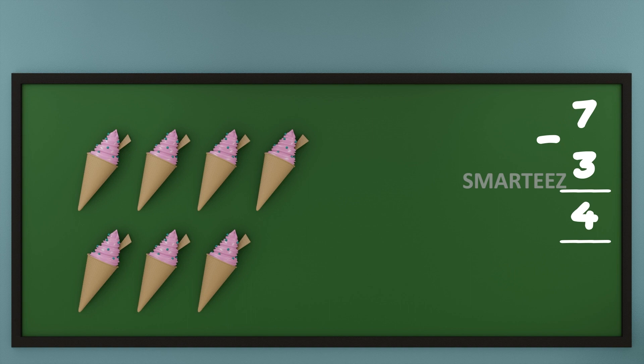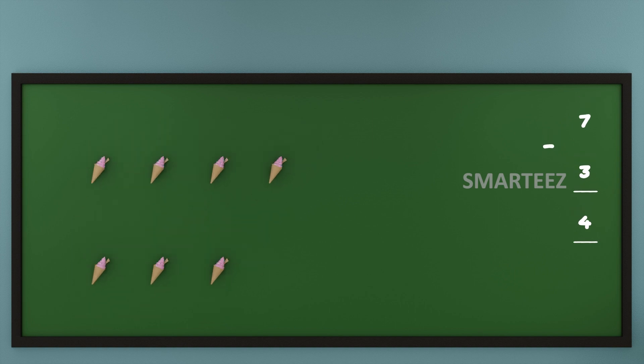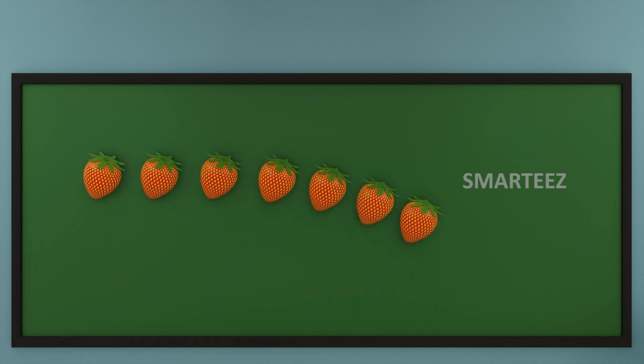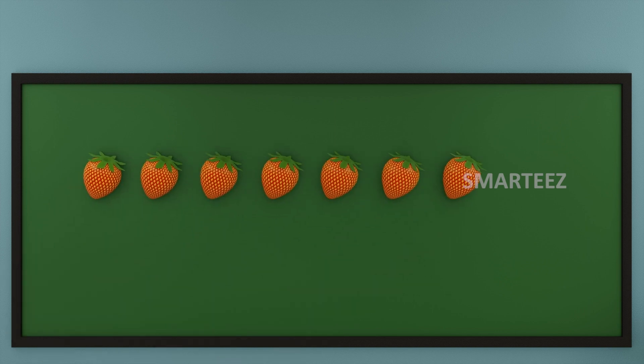Ice creams are real yummy, isn't it? Now let's look at another yummy thing — a fruit. Strawberry! Let's start with seven strawberries and subtract three strawberries out of them. Let's see what happens.